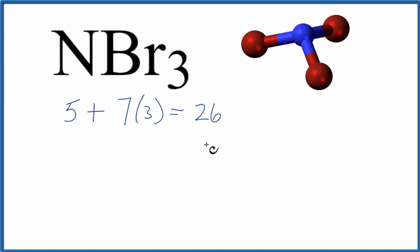We'll put the least electronegative element in the center of the structure, that's the nitrogen. Then we'll put the 3 bromines around it.